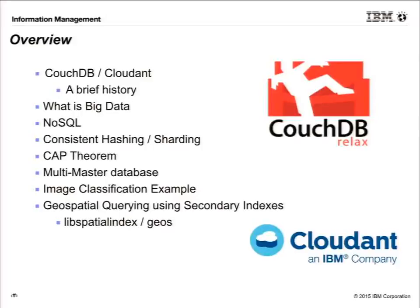So what are we going to talk about today? I thought it'd be useful because CouchDB is quite new. CouchDB with GIS is very, very new, so I'll give a brief history of that. I targeted this as a beginner's presentation, even though we're going to go into quite some depth on what is big data and how to scale out big data. We're going to talk about NoSQL, and then we're going to start having a dive into how you do distributed databases. From a very high level, we're going to talk about consistent hashing, how to do sharding, what is the CAP theorem, how do we prove it, why is it useful, and what does it mean for CouchDB?